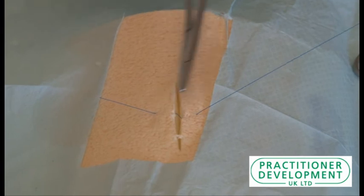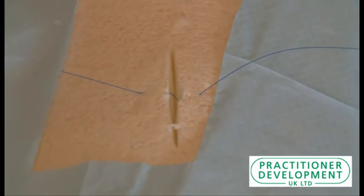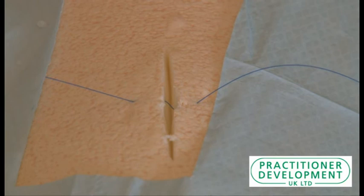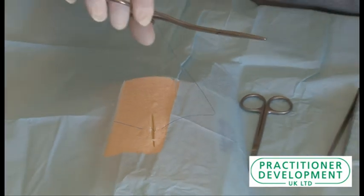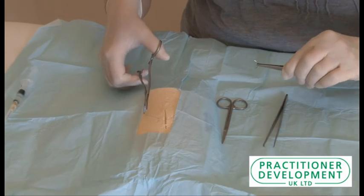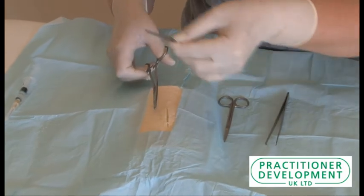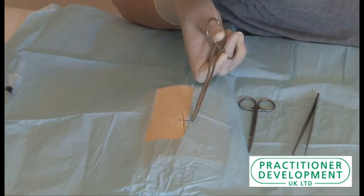So now we have the suture through, we need to tie the knot. It's easy to do about four knots here, and we start off by doing a double knot. We're going to wind around the needle holder, grab hold of the end of the suture and pull. We're going to go once round, grab the end of the thread and pull in the opposite direction.